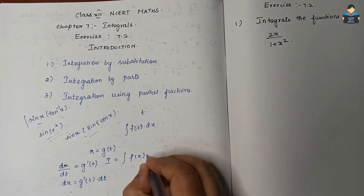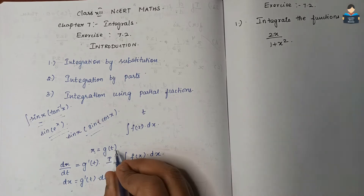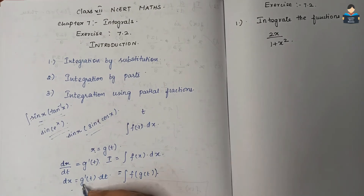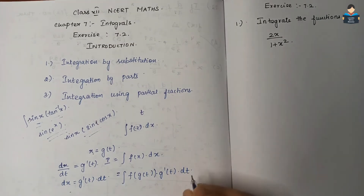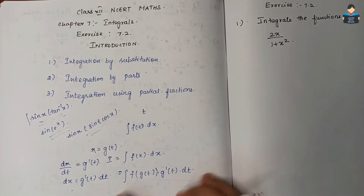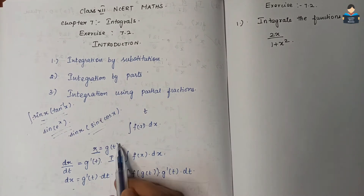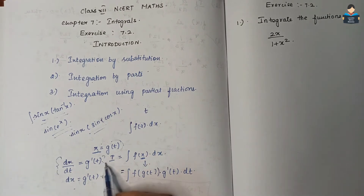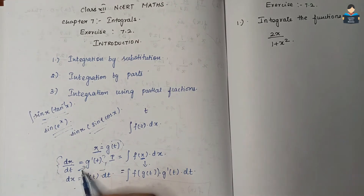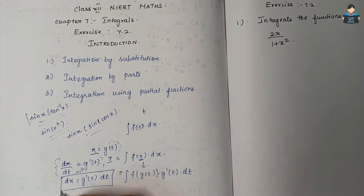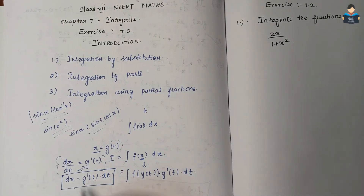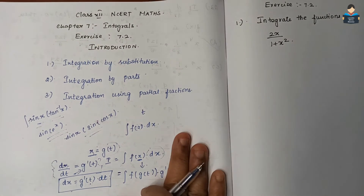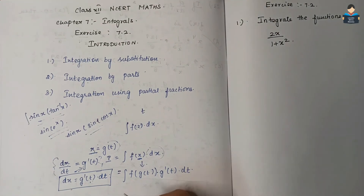Now we substitute here. We have integral f of x dx. Here x is equal to g of t, so integral f of g of t, and dx is equal to g dash of t into dt. Here f of x is replaced by f of g of t, and dx is replaced by g dash of t into dt. This is just substitution.